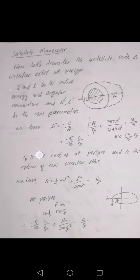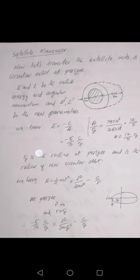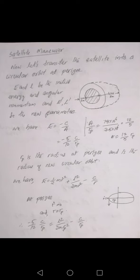We are always required to change the orbit of a satellite from circular to elliptical, or elliptical to circular, or hyperbolic. This is called a satellite maneuver. Here we are going to solve the same problem discussed earlier, where the satellite was orbiting in an elliptical orbit. We are going to change the orbit to a circular one by having a blast at perigee.